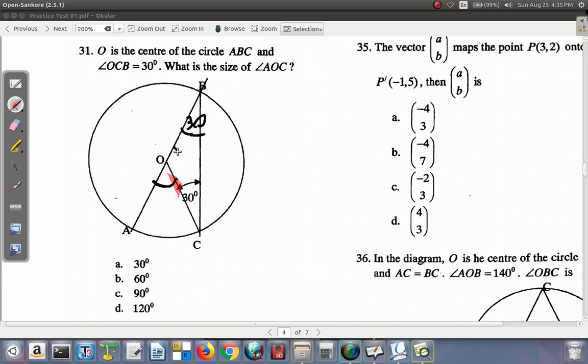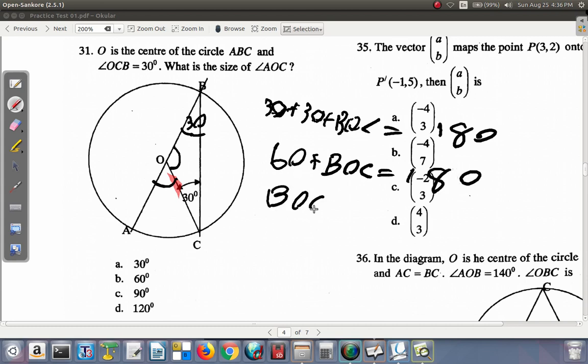Now the third angle that we haven't found out yet is this one, the third angle in the triangle. You know that all of these angles add up to give you 180 degrees. All three angles in any triangle, the sum is 180 degrees. So the 30 plus the other 30 plus angle B, O, C, is equal to 180. You know 30 and 30, that's 60 plus B, O, C angle is 180 degrees. So B, O, C is going to be 180 minus 60, which gives you 120 degrees. So this angle here is 120.